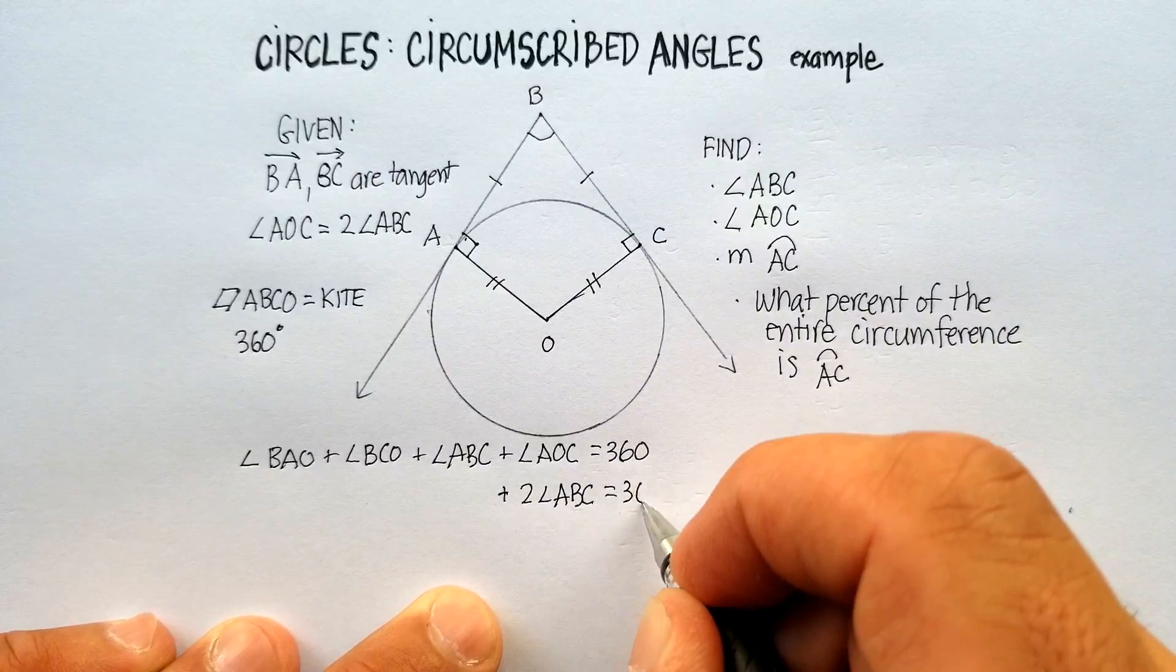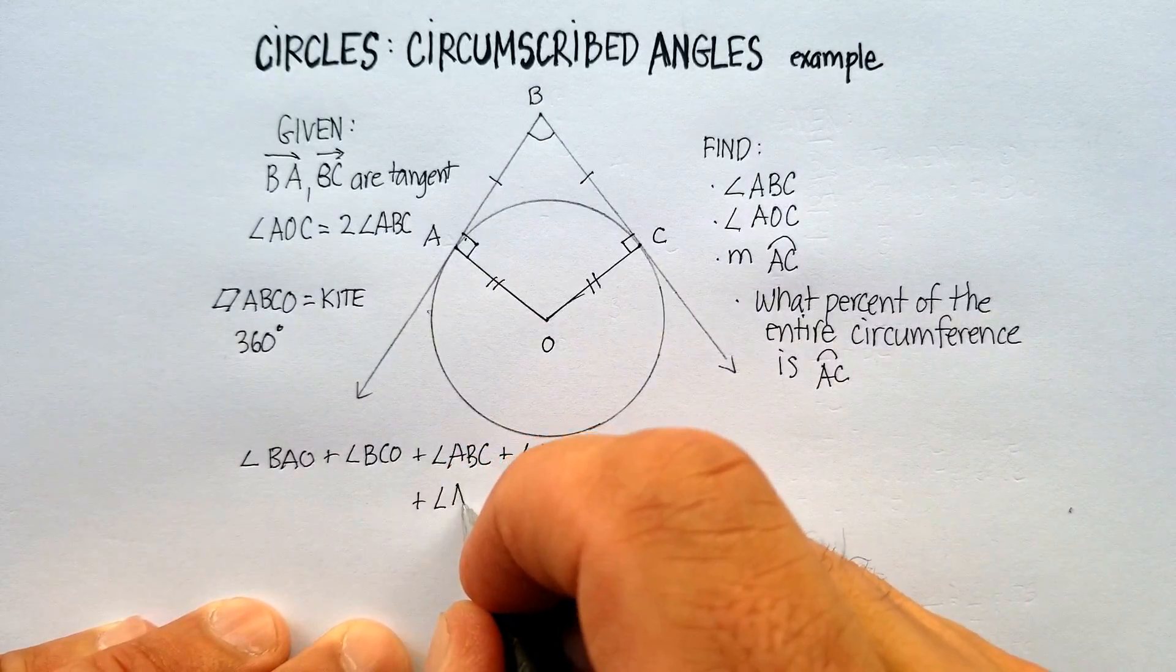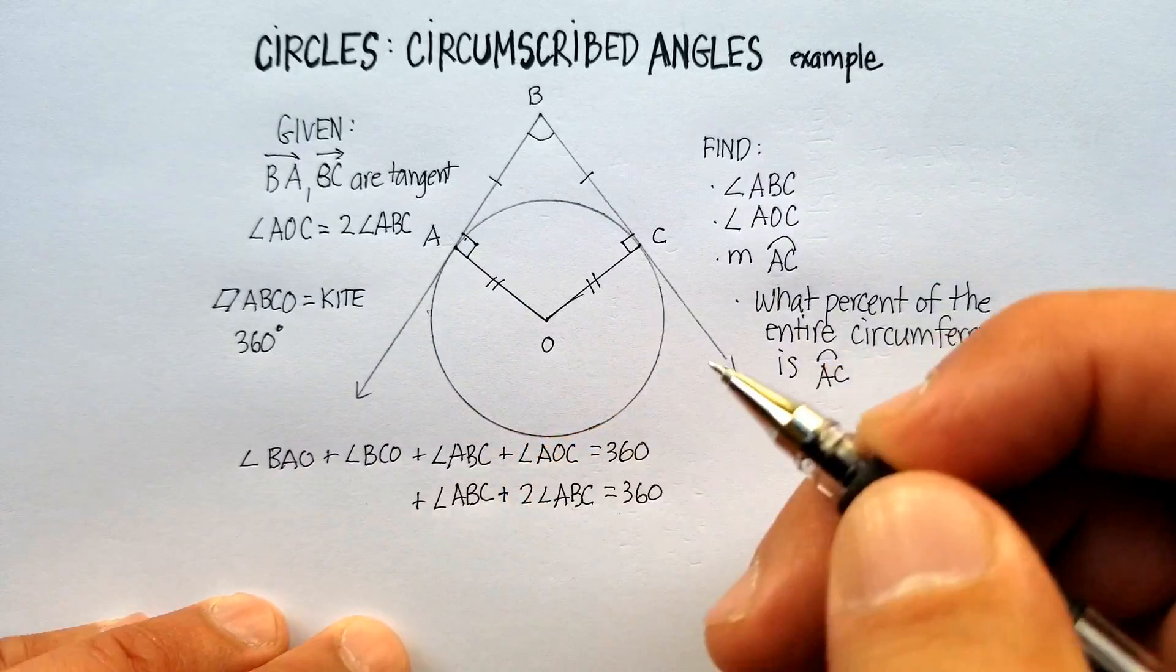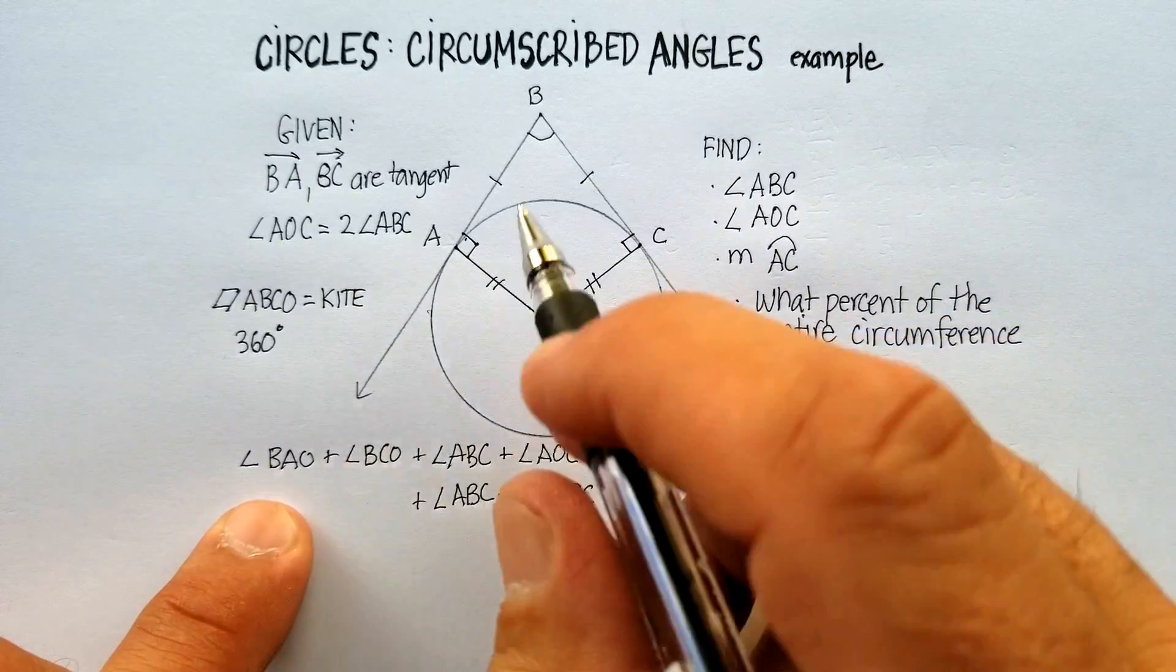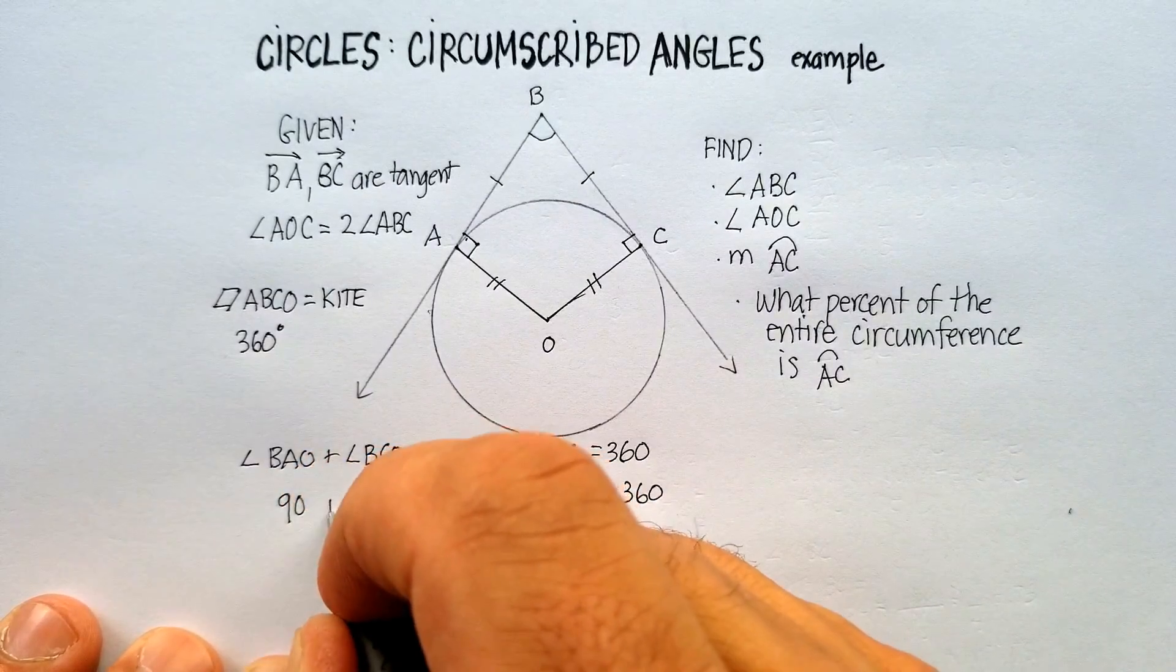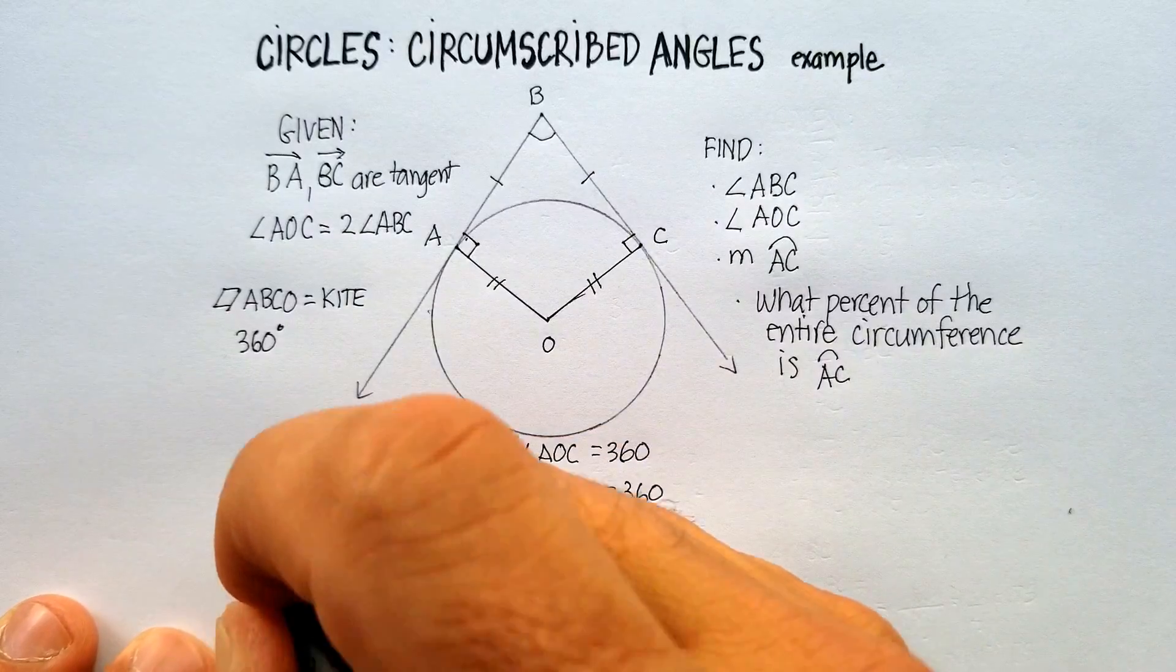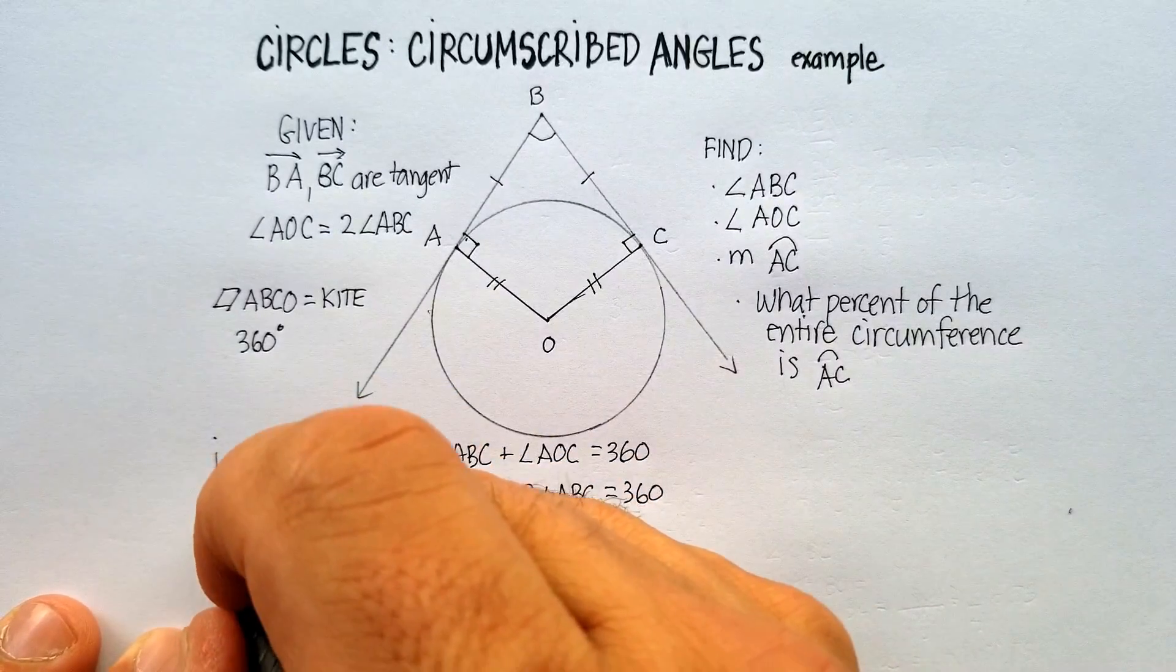There we go. And we know that this is also there. We also know that these two angles are both 90 degrees, so let's put those in there as well. There's my first step. There's my second.